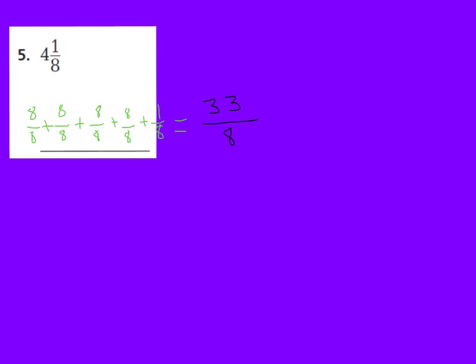Remember, you can check that by using the multiplication and addition way. So 8 times 4 is 32, and 32 plus 1 is 33 — then keep my denominator the 8: 33 eighths.